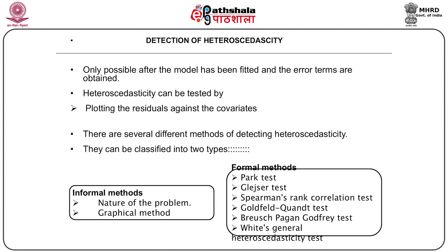When heteroscedasticity is present in a model, we would like to detect it before fitting the model. A few key points: detection of heteroscedasticity is only possible after the model has been fitted and the error terms have been obtained. Once the error terms are obtained, heteroscedasticity can be tested by plotting the residuals against the covariates or explanatory variables. Apart from graphical methods, there are several quantitative tests one can apply.